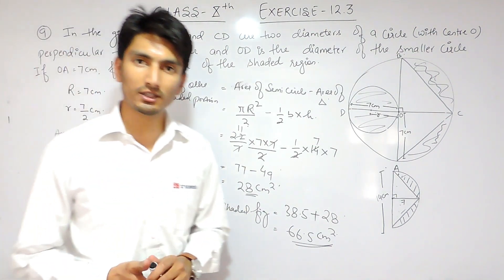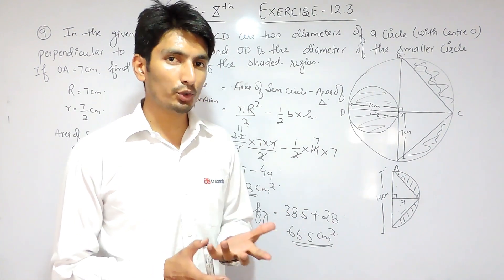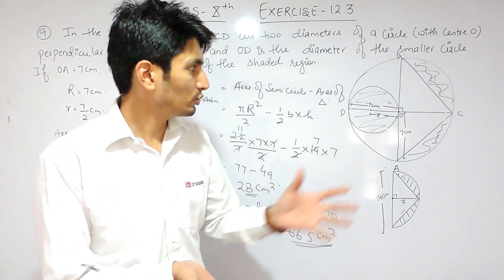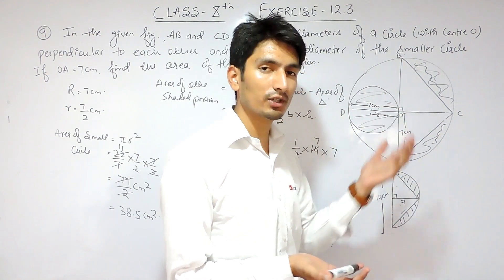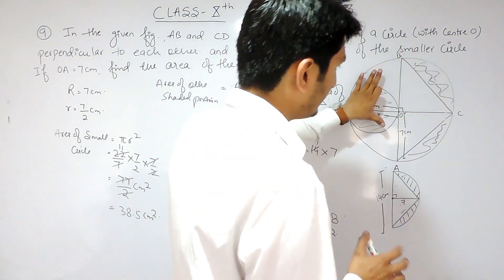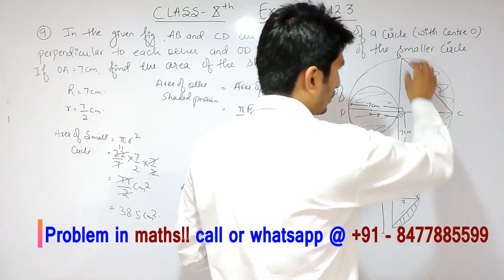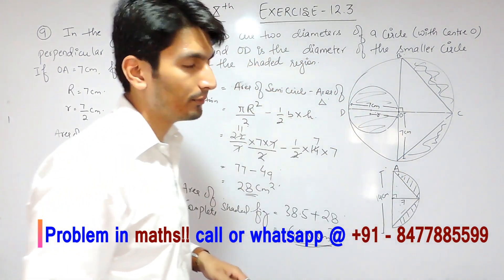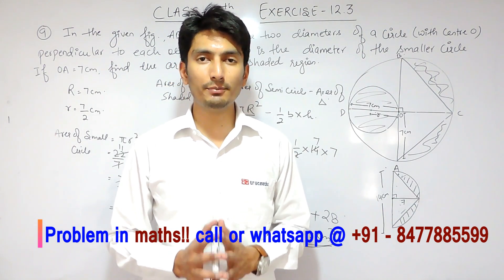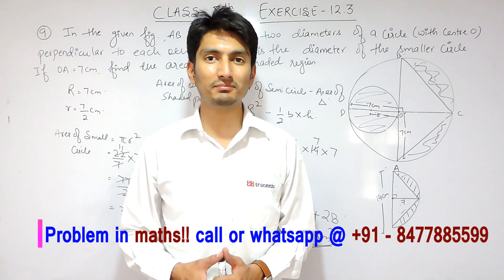This is how you can solve this question. The simple logic is: whenever you have to find the shaded portion, from the complete figure subtract the area of the unshaded figure. In this case, from the semi-circle I subtracted the area of the triangle to get the remaining shaded area. If you like this video, please subscribe to our channel. If you have any problem in maths, you can contact us by phone or send your query on WhatsApp. Thank you.